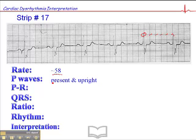There are P waves, and they're present and upright, and they're pretty consistent in morphology. There's always a little bit of artifact that's going to skew the P wave and QRS morphologies a little bit, but they're pretty consistent with very little variation. The PR interval is prolonged — it's 0.22 seconds. So whatever the rhythm is, we've also got a first-degree AV block.